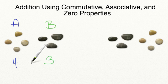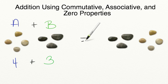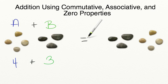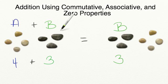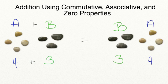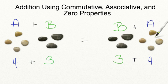If we were to add these together, we would have a group of seven rocks. The commutative property tells us that if we add yellow rocks plus gray rocks, it's going to be the same amount as adding our gray rocks and then our yellow rocks. We still have three gray rocks, displayed as B, and we add that to A, the yellow rocks. We did not change the number of rocks — we only changed the order.